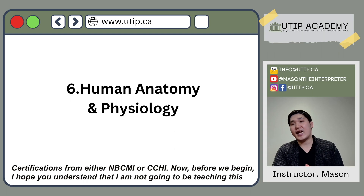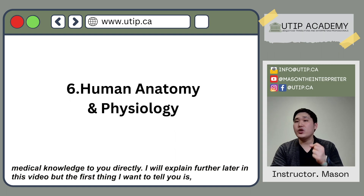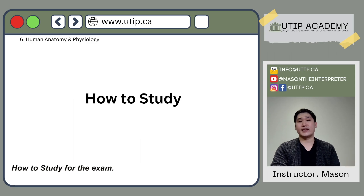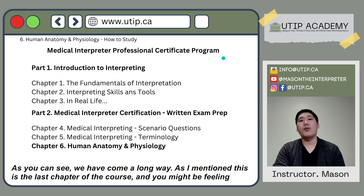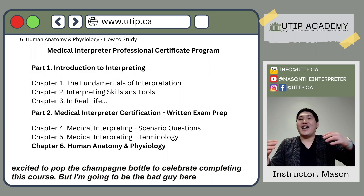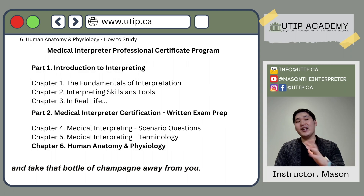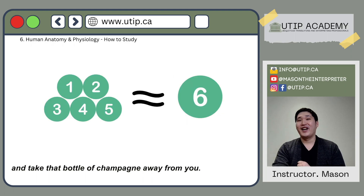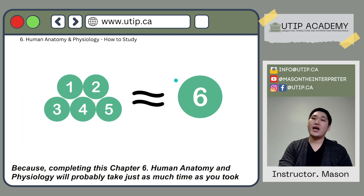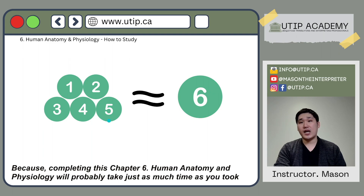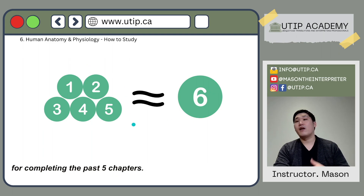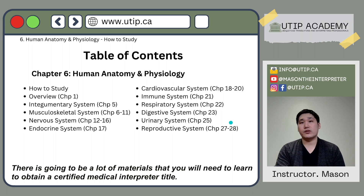Before we begin, I hope you understand that I am not going to be teaching this medical knowledge to you directly. I will explain further later in this video, but the first thing I want to tell you is how to study for the exam. This is the last chapter of the course, and you might be feeling excited to celebrate completing this course. But completing this chapter 6, Human Anatomy and Physiology, will probably take just as much time as you took for completing the past 5 chapters. There is going to be a lot of materials that you will need to learn to obtain a certified medical interpreter title.